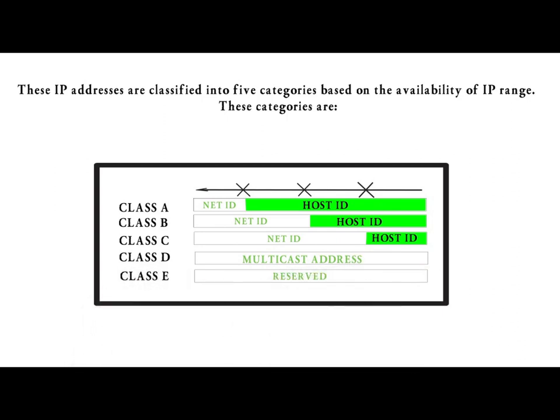Each class has a range of valid IP addresses. The value of the first octet determines the class. IP addresses from the first three classes, A, B and C, can be used for host addresses. The other two classes are used for other purposes, class D for multicast and class E for experimental purposes.